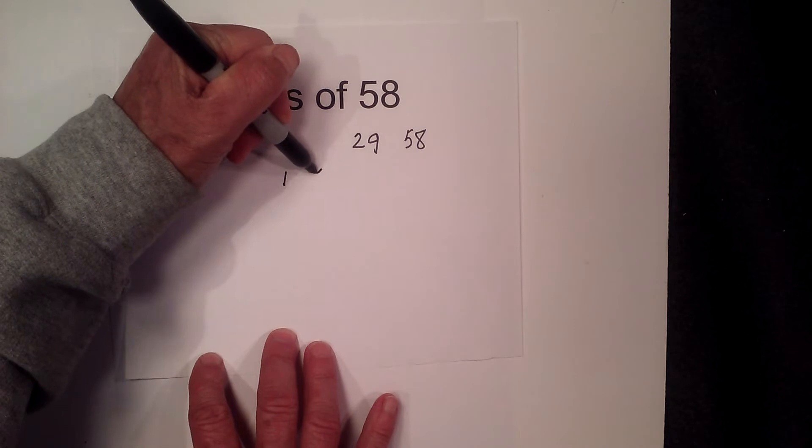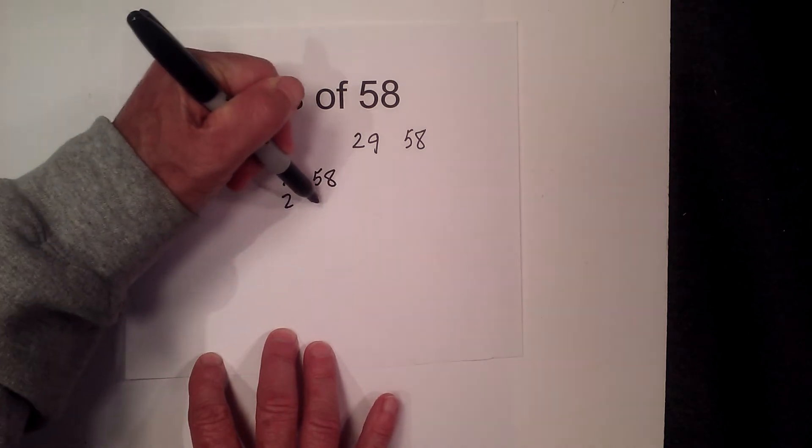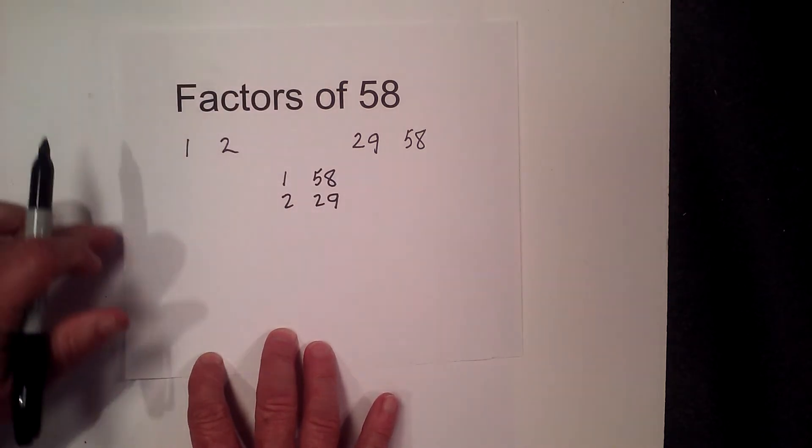So the pairs, if you want to write them in pairs, it's 1 and 58, 2 and 29.